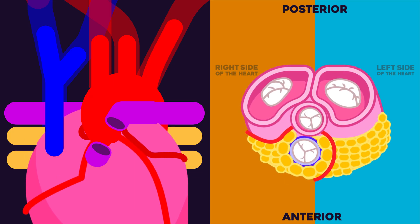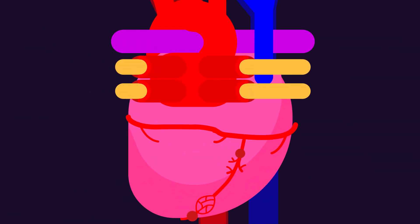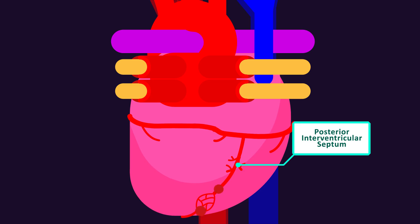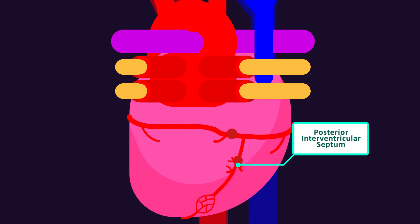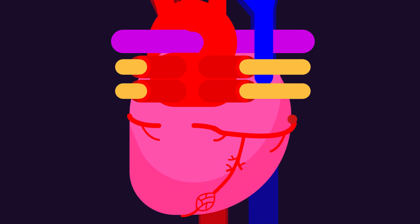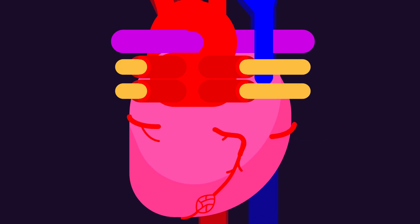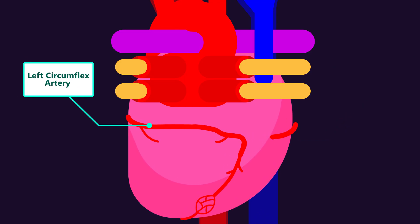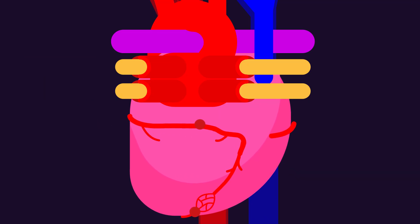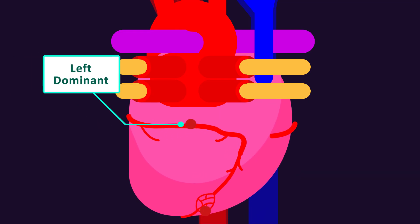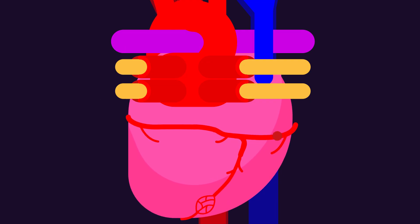Coronary artery dominance. The artery that supplies the posterior aspect of the interventricular septum, or the posterior descending artery, determines coronary dominance. If the posterior descending artery is supplied by the right coronary artery, then the coronary circulation would be classified as right dominant. However, if a branch of the left artery, specifically the left circumflex artery, supplies the posterior descending artery, then the coronary circulation would be classified as left dominant. If the posterior descending artery is supplied by both the right coronary artery and the circumflex artery, then the coronary circulation would be classified as co-dominant.